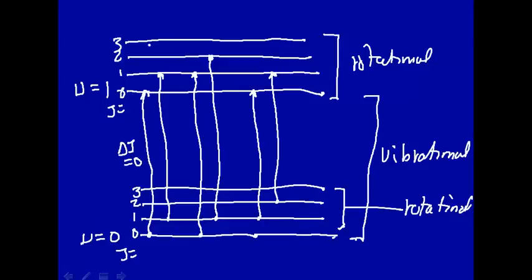So we've grouped these transitions into Δj equals zero, here Δj equal plus one, and here Δj equal minus one.